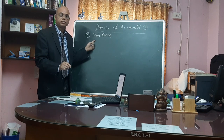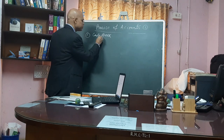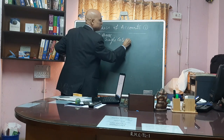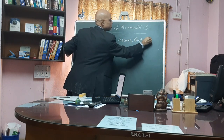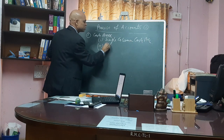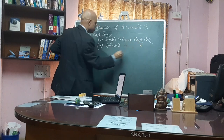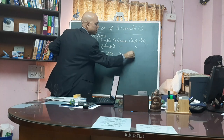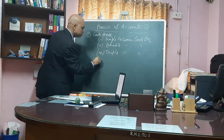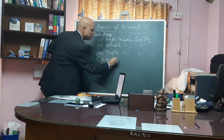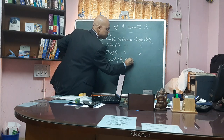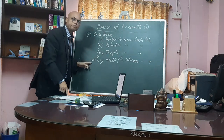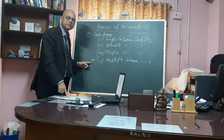Cash book — how many types? Cash book may be: number one, single column cash book; number two, double column cash book; number three, triple column cash book; number four, multiple column cash book. Multiple column cash book is not mentioned in maximum books.